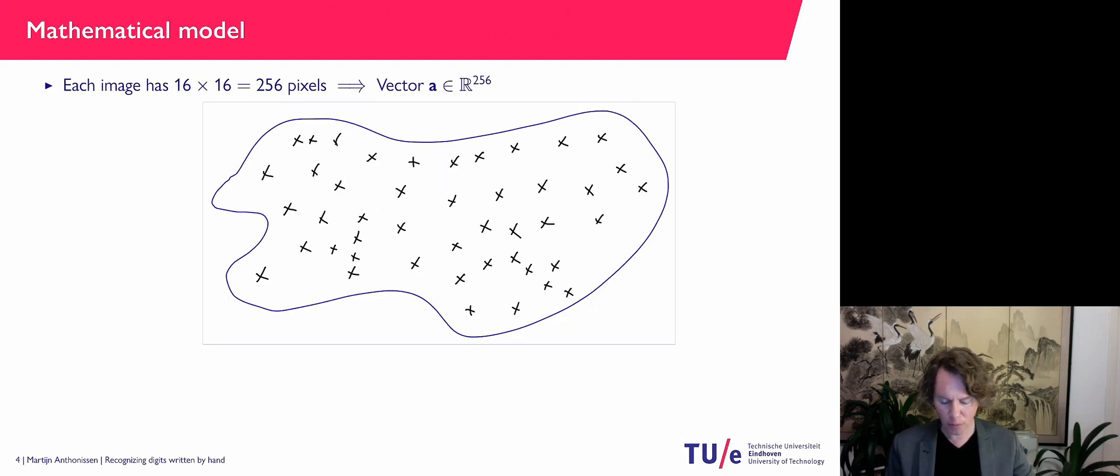So the mathematical model we will be using is the following. We have got a 16 by 16 grayscale image and what we do is we look at the columns there. And every pixel in the image has a grayscale value.